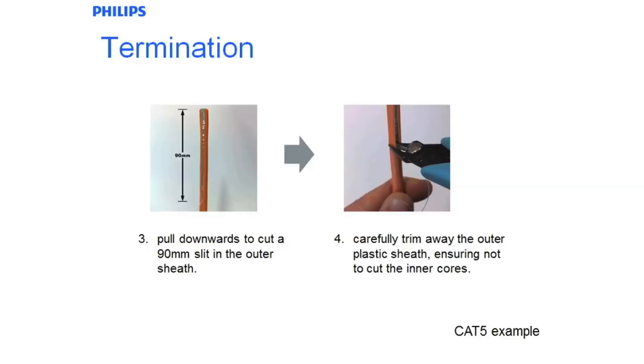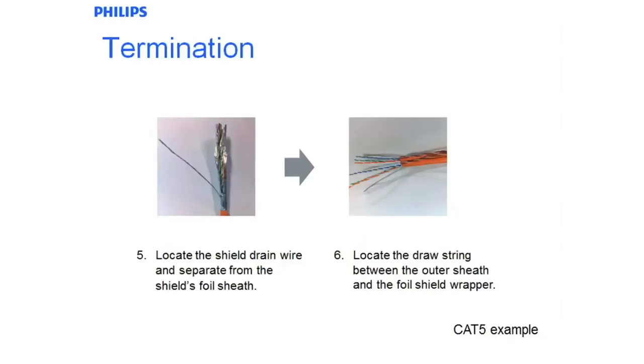Locate the shield drain wire and separate from the foil sheath. The drain wire is the shield termination. The foil that goes around it gives 100% shielding of the inner conductors. This increases the noise immunity of the network.